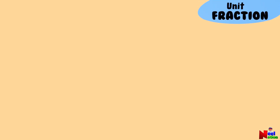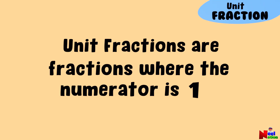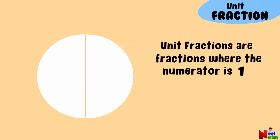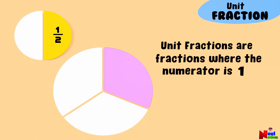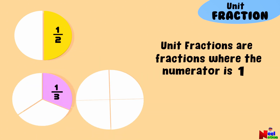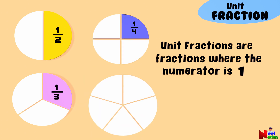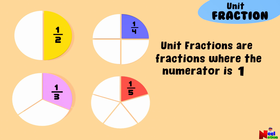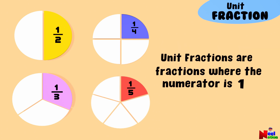Now let's learn about unit fractions. Unit fractions are fractions where the numerator is one. The term unit in unit fractions refers to a single part or one unit out of the whole. These fractions represent portions of a whole, where the whole is divided into equal parts and each part is denoted by a unit fraction. For example, one half, one third, one fourth, one fifth and so on are all unit fractions.